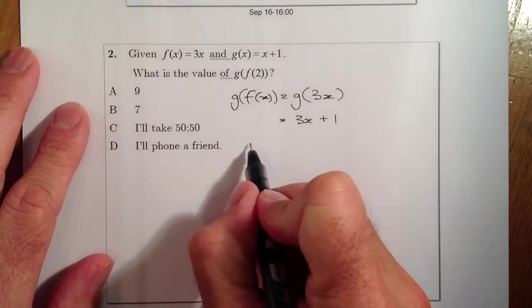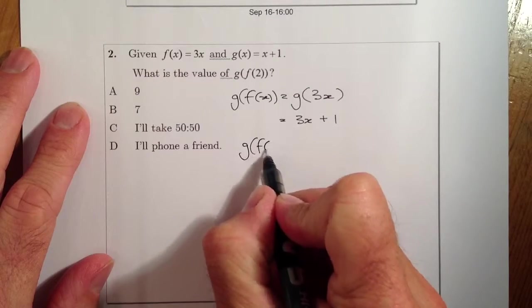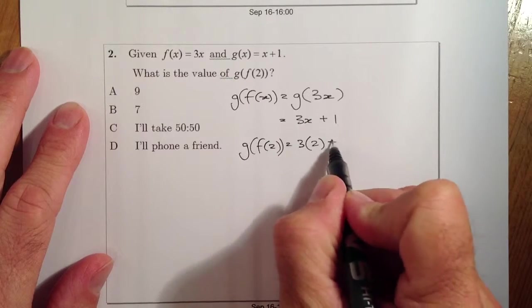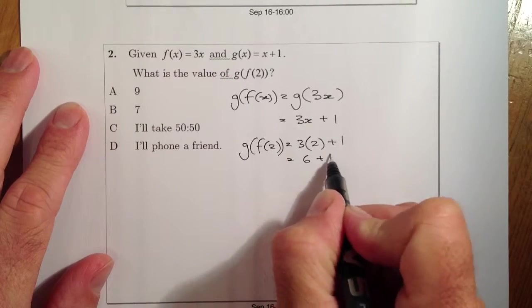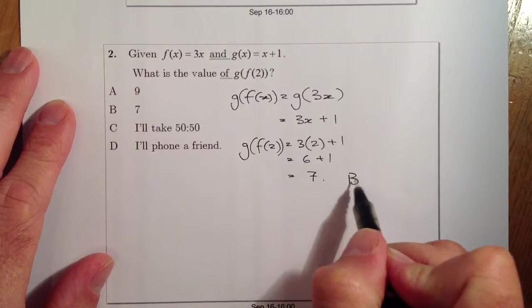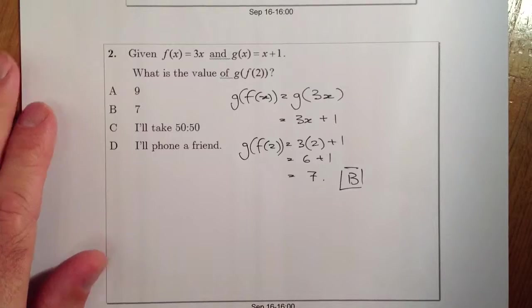Right then, substitute our value in. So if I have g of f of 2, I'll just substitute a 2 in there, plus 1 is going to give me 6 plus 1, which gives me a value of 7. So in here, I'm looking for an answer, B.